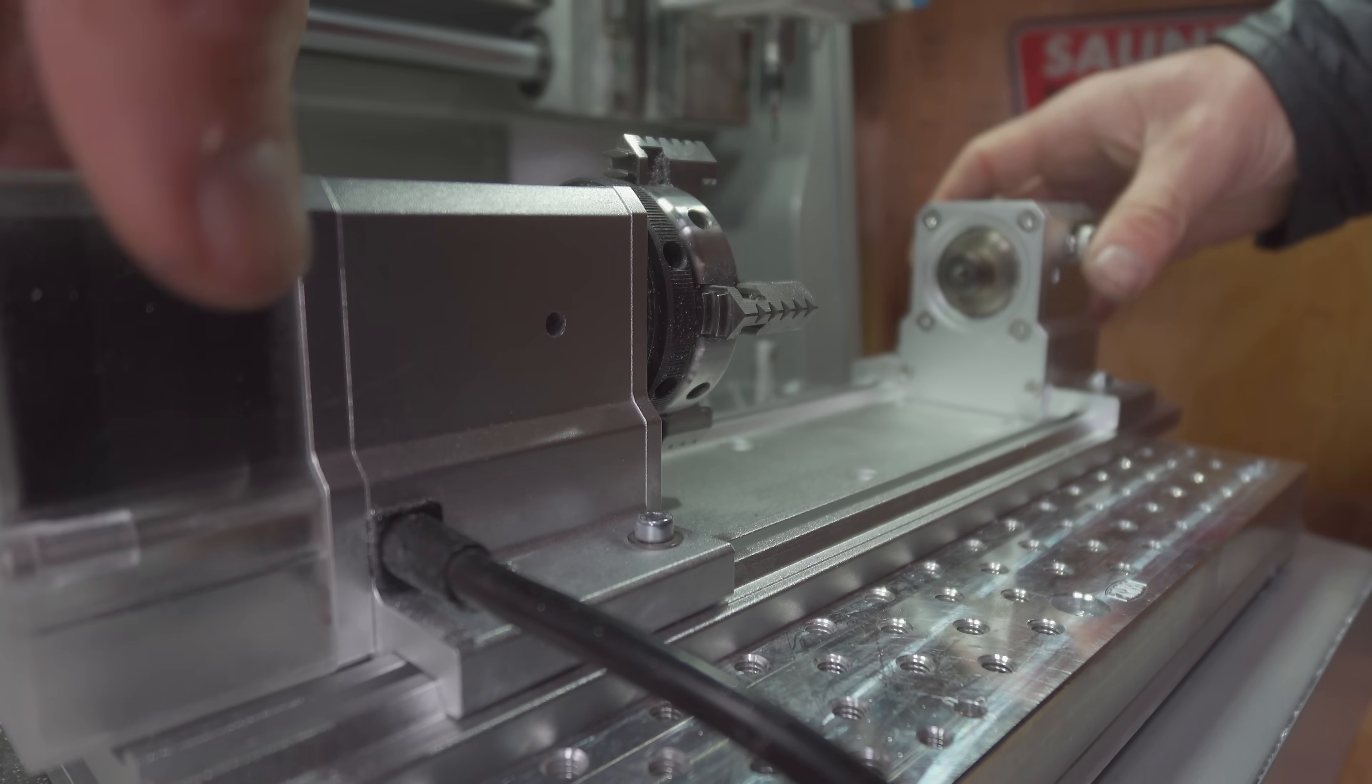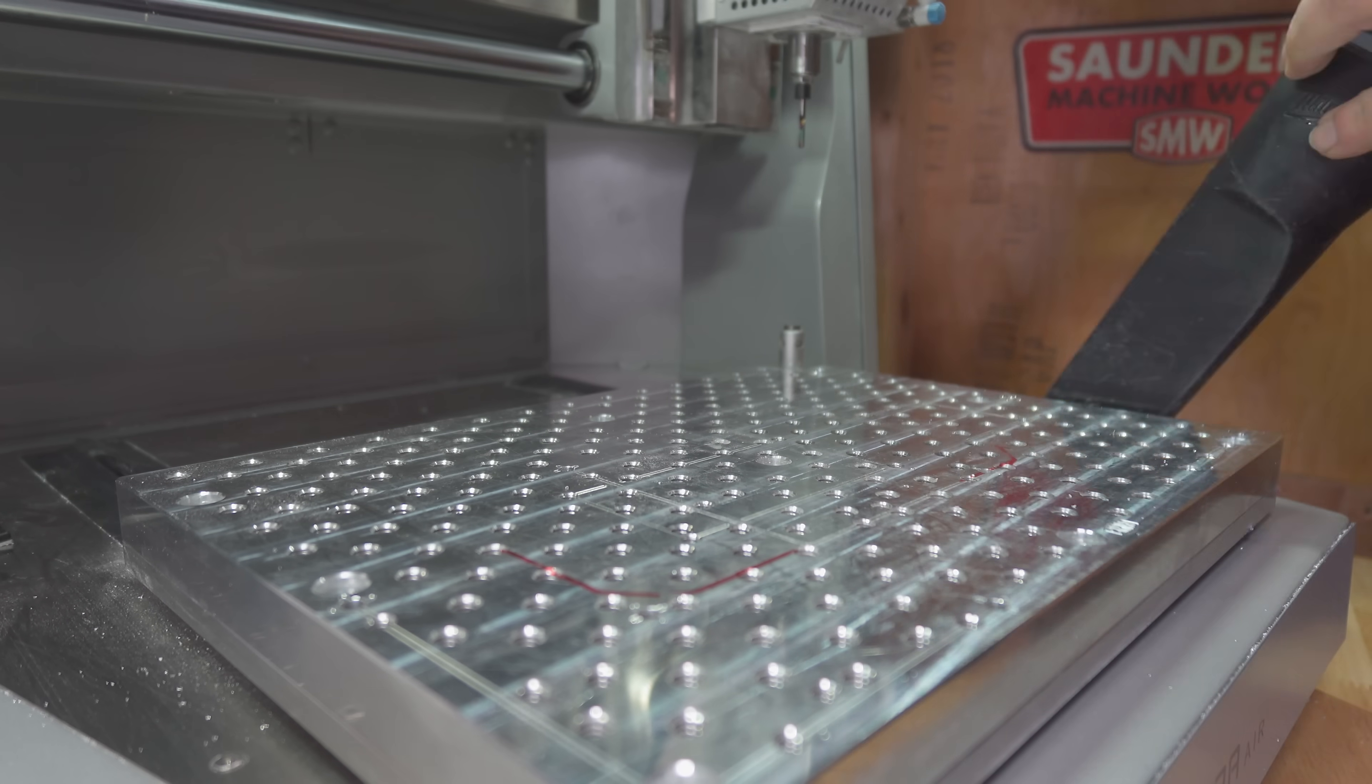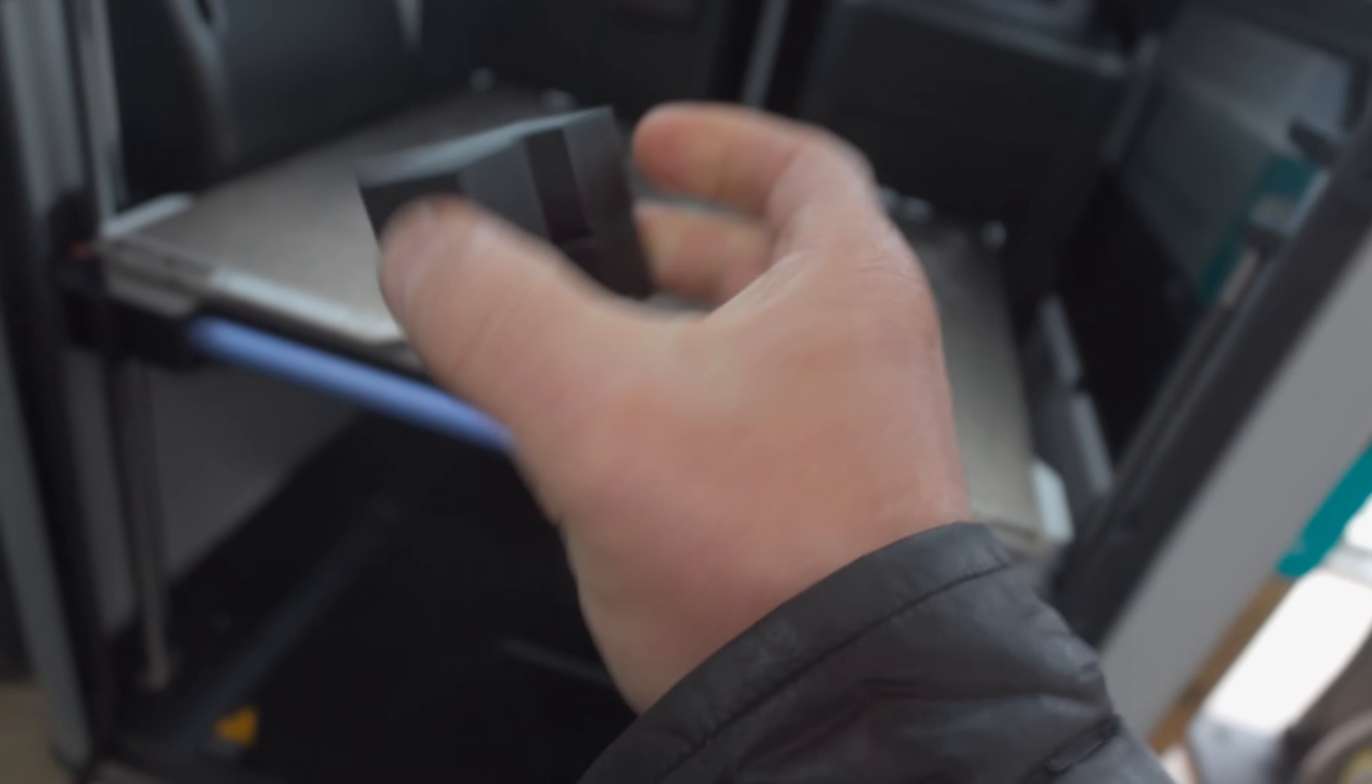With phase two complete, we can now move on to the final operation. Since we eliminated all of the material that we initially clamped to in the vise, and we need to correctly index the rotation of the part, I created a simple 3D printed holding fixture.